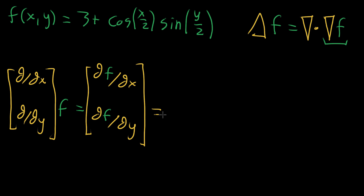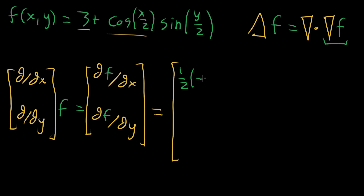In our specific example, when we take the partial derivative of f with respect to x: three is just a constant, so nothing happens. For cosine of x halves, the derivative with respect to x pulls out that one-half, and the derivative of cosine is negative sine. So we get negative one-half sine of x over two, and since y is just a constant, we keep that sine of y over two multiplied in.